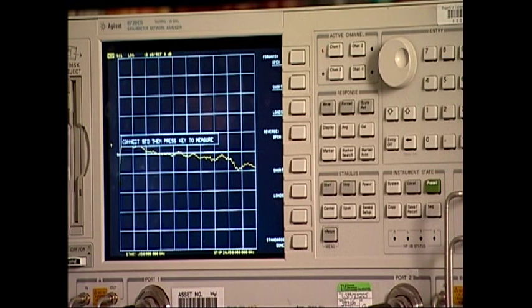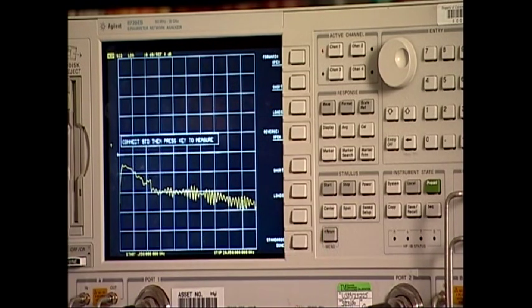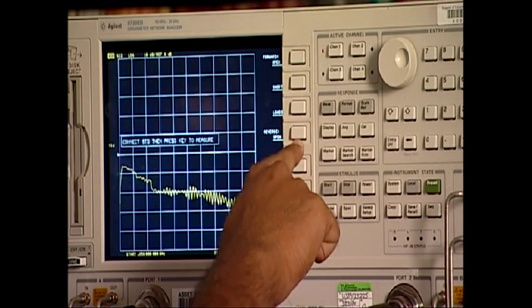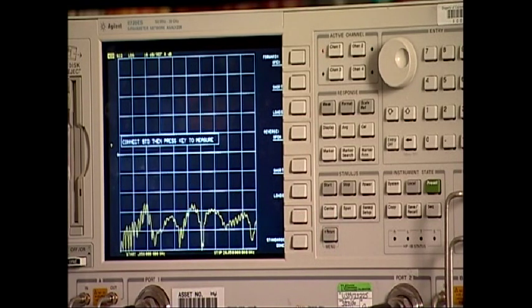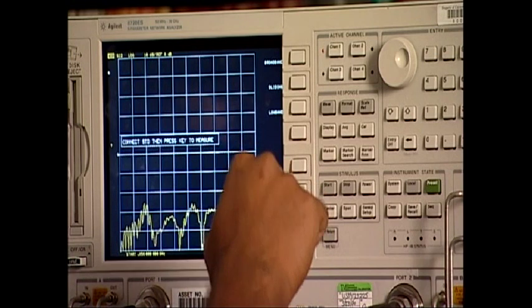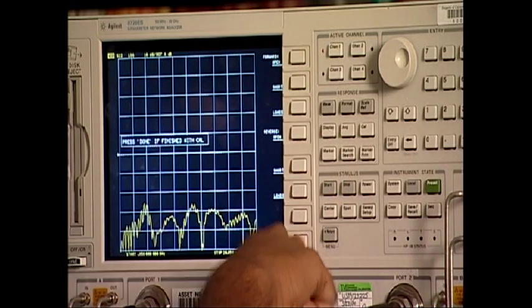Now for the reverse measurements, we connect the cable at port 2 and connect the open standard to our cable and select open. We then connect the short load to the cable at port 2 and select short. We then connect the load standard to port 2, select load, select broadband, done loads.